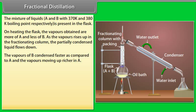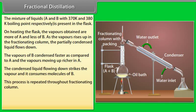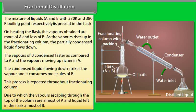As the vapours rise up in the fractionating column, the partially condensed liquid flows down. The vapours of B condense faster compared to A, and the vapours moving up are richer in A. The condensed liquid flowing down strikes the vapour and consumes molecules of B. This process is repeated throughout the fractionating column, so the vapours escaping through the top are almost entirely A, and the liquid left in the flask is almost entirely B.